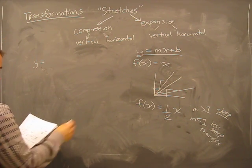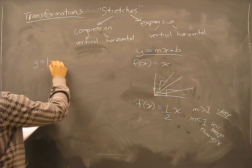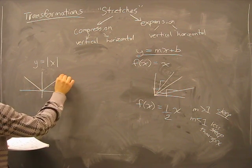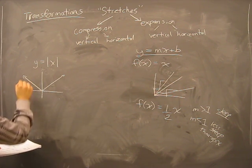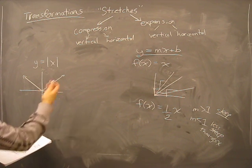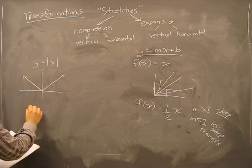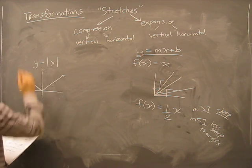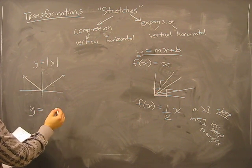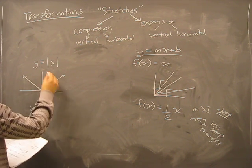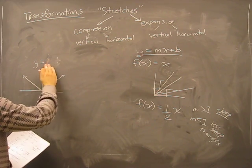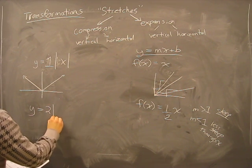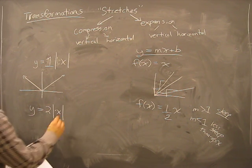Alright. For example, if we have this function, now we know from before that that's this graph going on forever. If we were to change it to y prime, this is the new function to be... I just had a mind mess up. This is really one times the absolute value of x. If we change this to 2 times the absolute value of x,